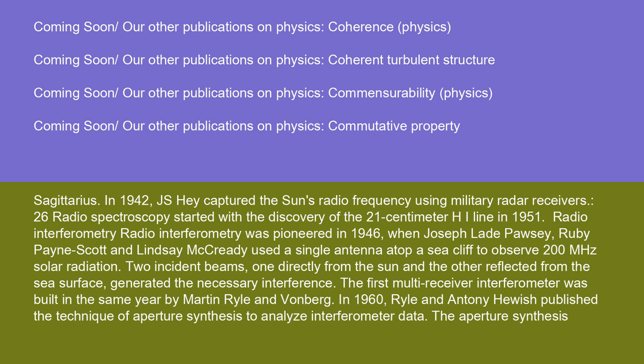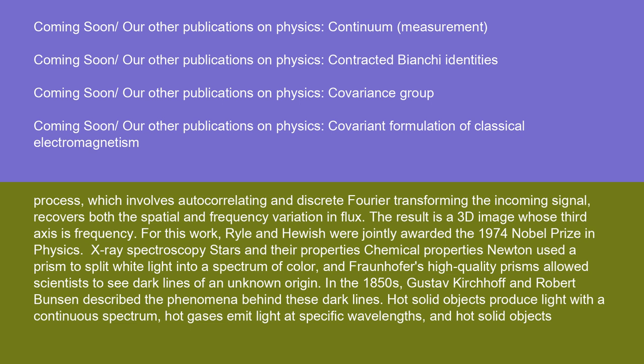Radio interferometry was pioneered in 1946 when Joseph Pawsey, Ruby Payne-Scott, and Lindsay McCready used a single antenna atop a sea cliff to observe 200 megahertz solar radiation. Two incident beams — one directly from the sun and the other reflected from the sea surface — generated the necessary interference. The first multi-receiver interferometer was built in the same year by Martin Ryle and Von Berg. In 1960, Ryle and Antony Hewish published the technique of aperture synthesis to analyze interferometer data. The aperture synthesis process, which involves auto-correlating and discrete Fourier transforming the incoming signal, recovers both the spatial and frequency variation in flux, resulting in a 3D image whose third axis is frequency. For this work, Ryle and Hewish were jointly awarded the 1974 Nobel Prize in physics.